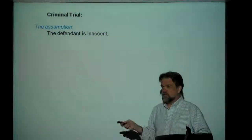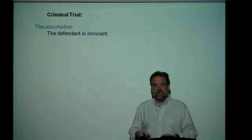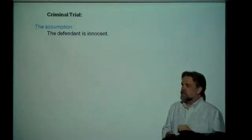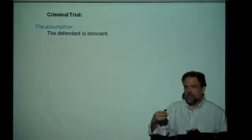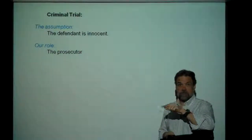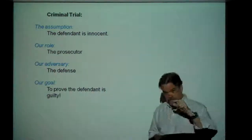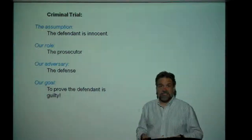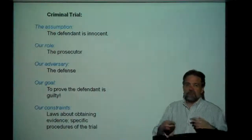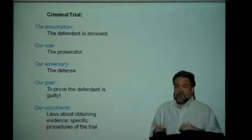In a criminal trial, you have an assumption: the defendant is innocent until proven guilty. So we have somebody who's accused of murder — they were found dancing over a corpse with a bloody knife, singing hallelujah — and even though I want to think that this guy is guilty, I have to assume he's innocent until I can go through the process and prove that he is guilty. Our goal, as the prosecutor, is to prove that this guy is actually guilty. Our adversary is the defense. We can't just do anything we want to — we have constraints: the laws about obtaining evidence and the procedures of the trial that we must adhere to.